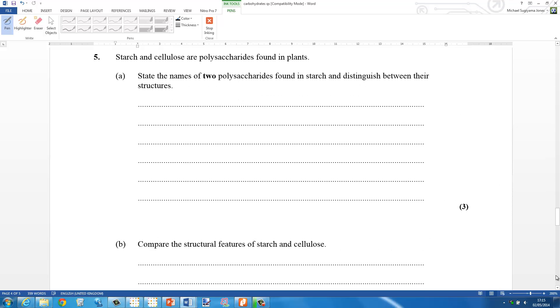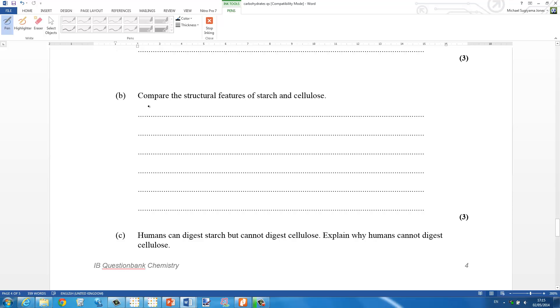Next we're comparing the structural features of starch and cellulose. Both are polymers of glucose, that's a similarity. Starch has alpha 1,4 glycosidic links, so starch is a polymer of alpha glucose. And cellulose has beta 1,4 glycosidic links, which means cellulose is composed of beta glucose. That's the difference.